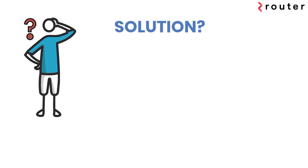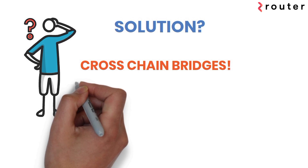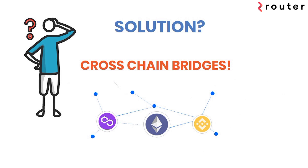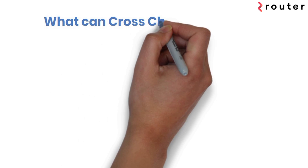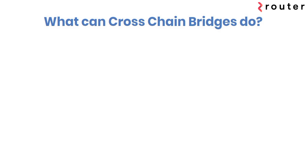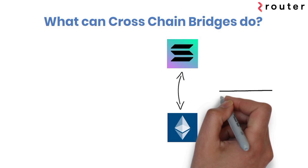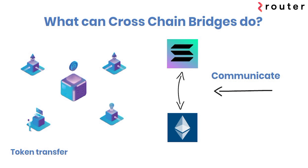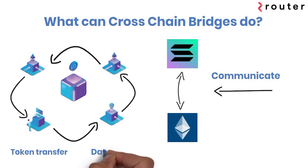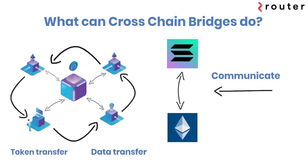The natural solution to this problem is cross-chain bridges. Cross-chain bridges facilitate communication among different blockchains. By using cross-chain bridges, one can transfer assets and data from one blockchain to another.